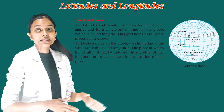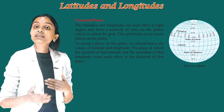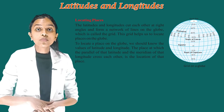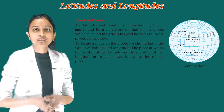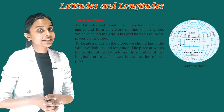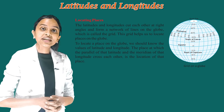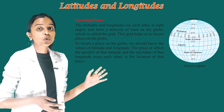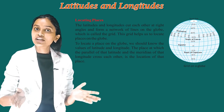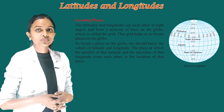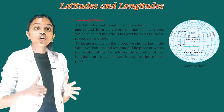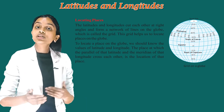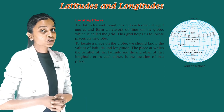Locating places — the latitudes and longitudes cut each other at right angles and form a network of lines on the globe which is called the grid. This grid helps us to locate places on the globe. To locate a place on the globe, we should know the values of latitude and longitude. The place at which the parallel of that latitude and the meridian of that longitude cross each other is the location of that place.